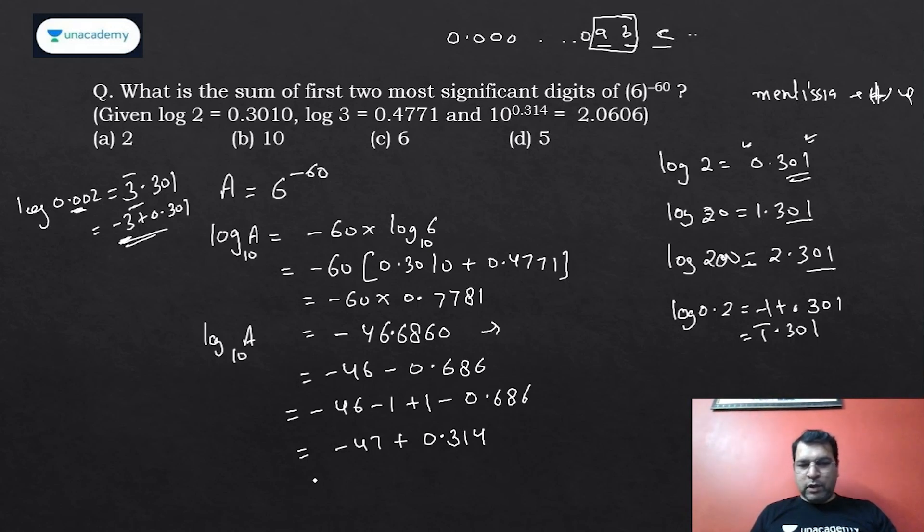Which in terms of logs gives you 4̄7.314. So log A is coming as this. Think about it: if log A base 10 = b, then A = 10^b.